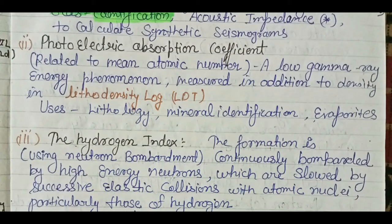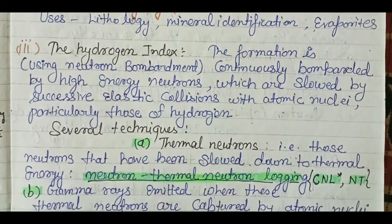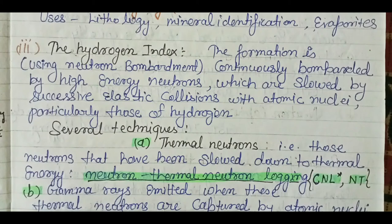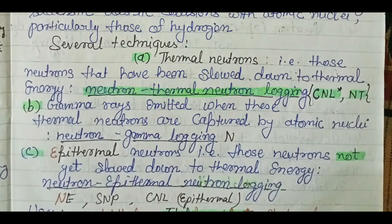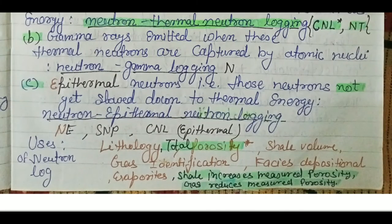The neutron log uses hydrogen index. The formation is continuously bombarded by high-energy neutrons, which are slowed by successive elastic collisions with atomic nuclei. Hydrogen nuclei are mostly responsible for slowing the neutrons. There are several techniques: thermal neutron logging measures neutrons slowed to thermal energy; neutron-gamma logging detects gamma rays emitted when thermal neutrons are captured; and epithermal neutron logging measures neutrons not yet slowed to thermal energy.